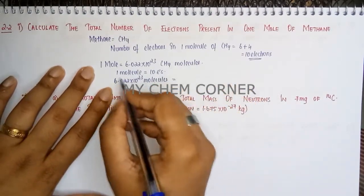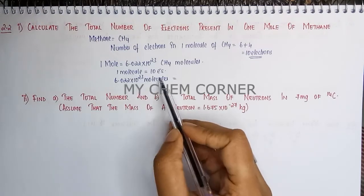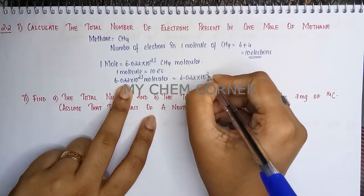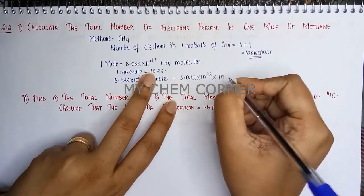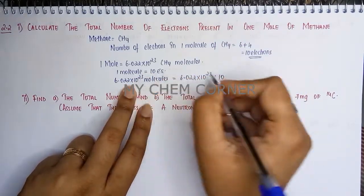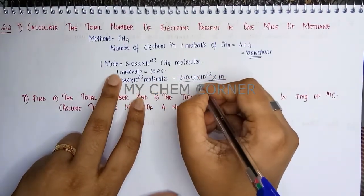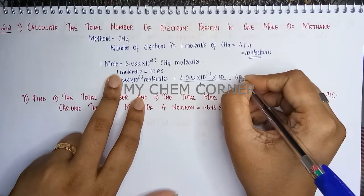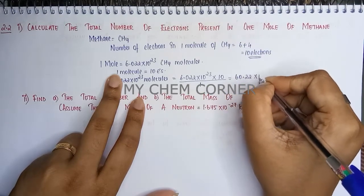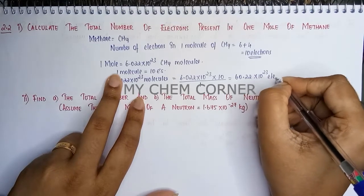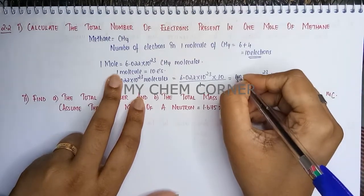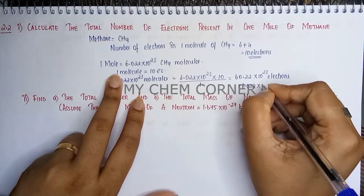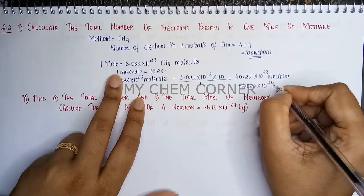Cross-multiplying gives us 6.022 × 10²³ × 10 electrons = 60.22 × 10²³ electrons. Shifting the decimal, this simplifies to 6.022 × 10²⁴ electrons. That is the total number of electrons in one mole of methane.